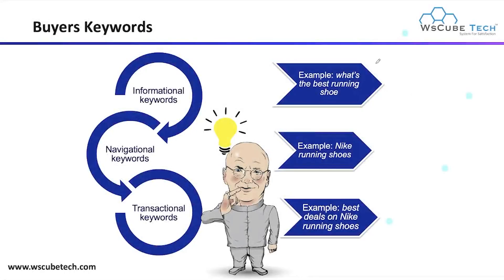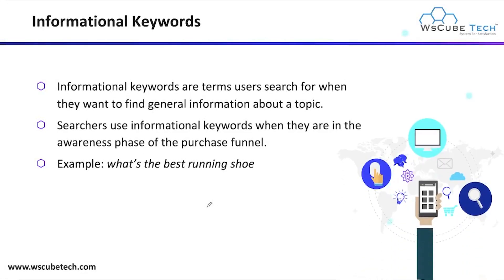After this, now we have buyers keywords, which is another form. In the case of buyers keywords, we have informational keywords, navigational keywords, and transactional keywords. Informational keywords are the terms used to search when someone wants to find general information about a topic. Searchers use informational keywords when they are in the awareness phase.